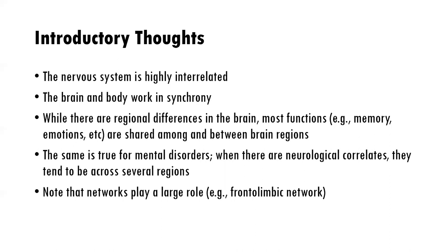The same is true for mental disorders. When we see neurological correlates of mental disorders, they tend to be across several regions of the brain. An example would be the frontolimbic network that you see impaired in things like trauma and depression. Networks play a role — connectivity between different parts of the brain. You can't learn about brain structures in isolation from each other.